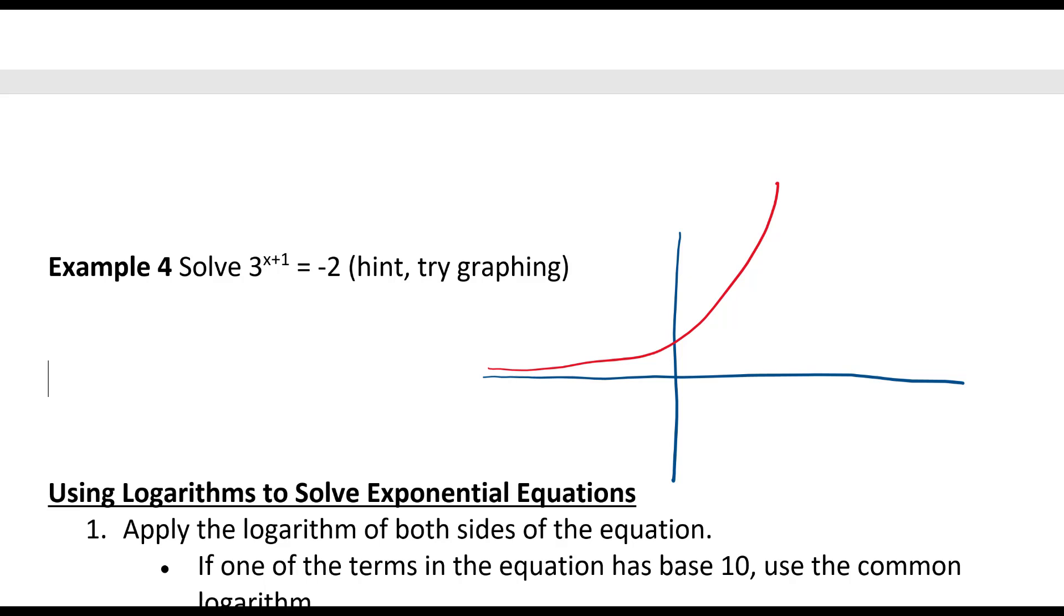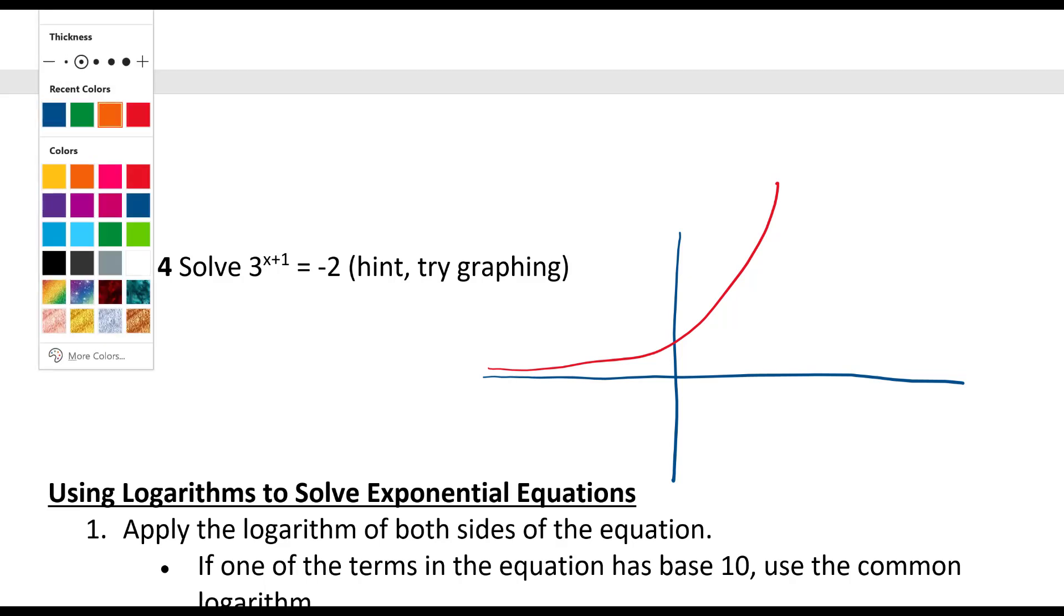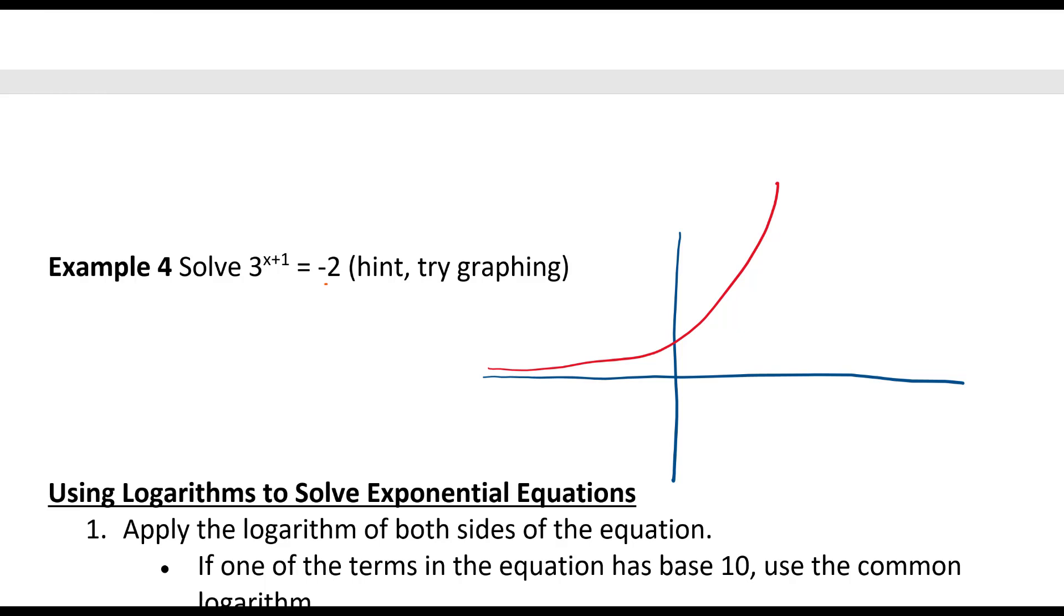If I look at y equals 3 to the x plus 1, that's the first one there. And then y equals negative 2, that's going to be down here. Well there's no place that they're touching, there's no place that they're going to cross. So there's no solution here.